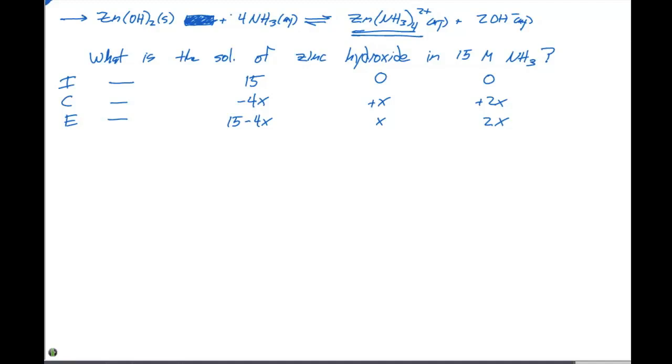From the previous notes on Wednesday, our K expression is equal to the Ksp times the Kf, because that's the two steps that are occurring. If we multiply those two together, we get 1.3 times 10 to the minus 7. So this is gonna be our K for this overall reaction. The K expression that we can set up will be the equilibrium concentration of the Zn(NH3)4 2+ complex ion, times the concentration of the OH minus ion squared, divided by the equilibrium concentration of NH3 to the fourth power. This is gonna equal 1.3 times 10 to the minus 7.